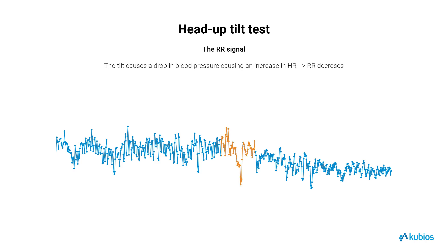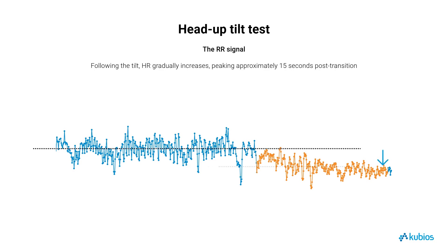The head-up tilt induces a significant gravitational shift of blood from the upper body to the abdomen and lower extremities, resulting in a reduction of central blood volume. This leads to a decrease in cardiac output and blood pressure. To counteract this abrupt drop in blood pressure, the sympathetic nervous system is activated, resulting in an increase in heart rate and peripheral vasoconstriction. Following the tilt, heart rate gradually increases, peaking approximately 15 seconds post-transition. Subsequently, a new baseline is established as the sympathovagal balance stabilizes.